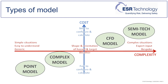Complex models may add features such as the size, shape and orientation of the hazard and target, along with weather and possible mitigation measures such as being indoors. These are likely to give better estimates of consequences in the near field and are often used for quantified risk assessments, as they are relatively easy to set up and fast to run.